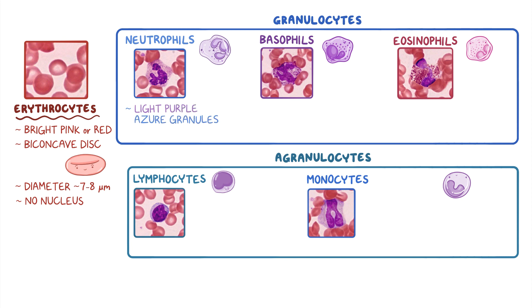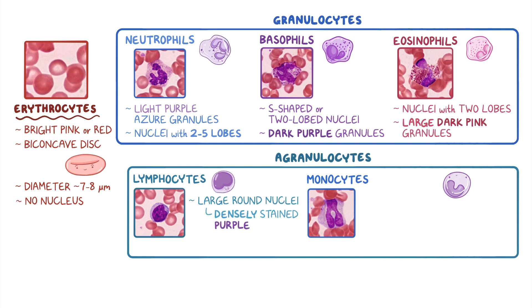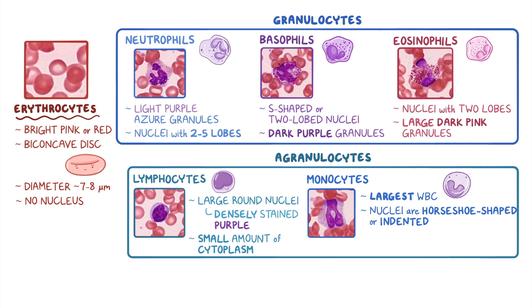Neutrophils have light purple azurophilic granules and distinct nuclei with 2-5 lobes. Basophils have either S-shaped or two-lobed nuclei, and their cytoplasm contains basophilic or dark purple granules. Eosinophils have nuclei with two lobes and many large eosinophilic or dark pink granules. Lymphocytes are round or oval cells with large round nuclei that are densely stained purple, with a relatively small amount of cytoplasm. Finally, monocytes are the largest type of white blood cell with large nuclei that are either horseshoe shaped or appear indented, and their cytoplasm has a frosted glass appearance due to the presence of small purple lysosomes and vacuoles.